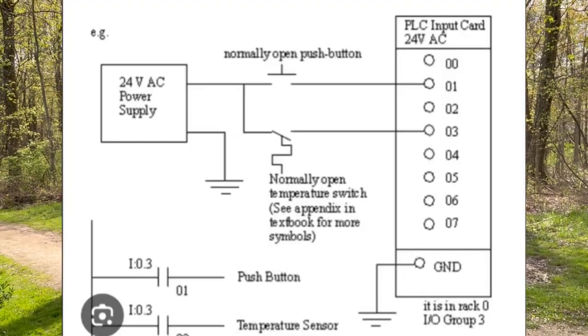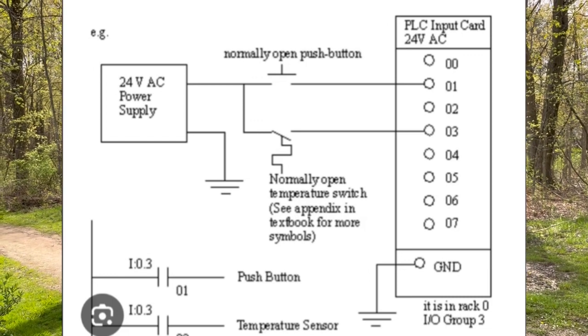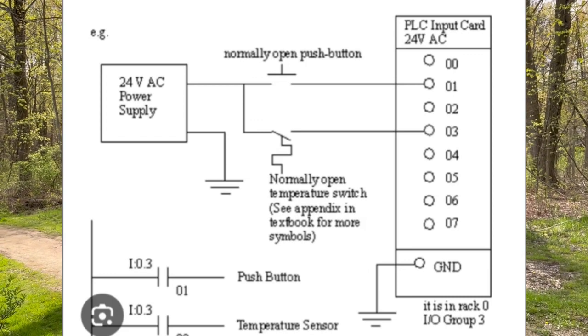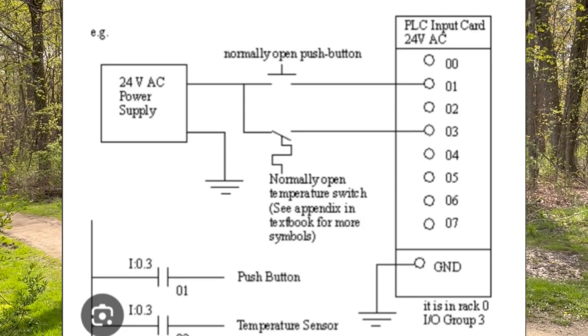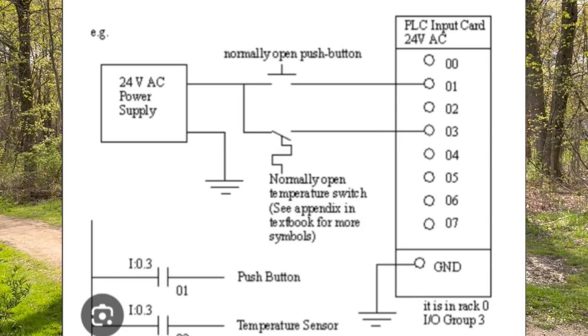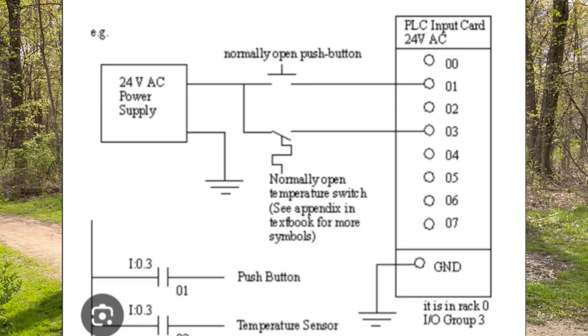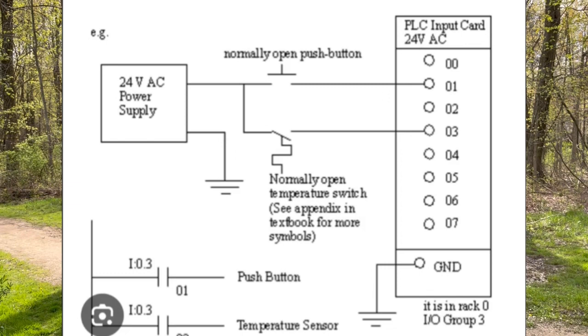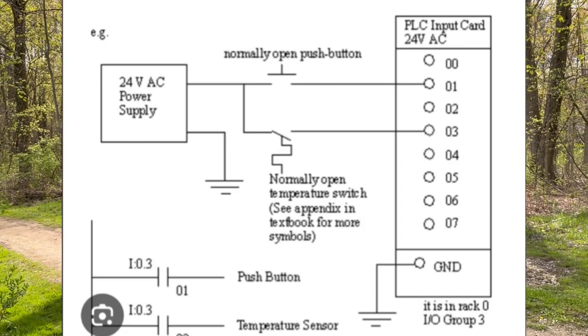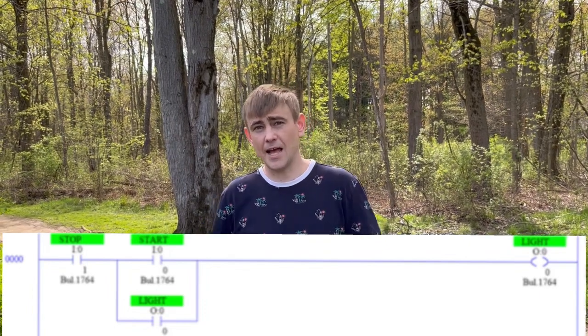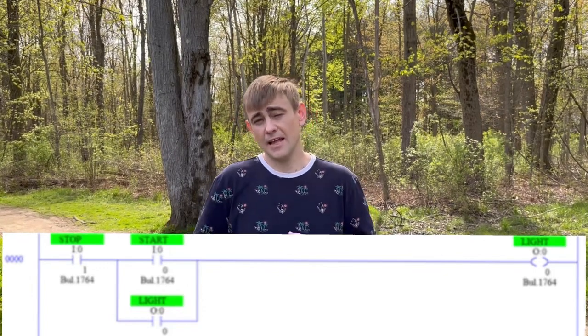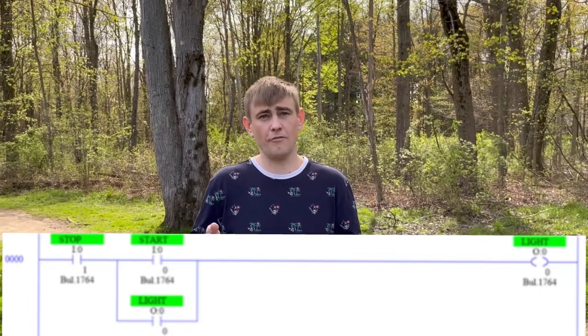So if you're using a normally open push button as a discrete input to a PLC, you would wire a power source to one terminal of the normally open push button. That power, whether it be 120 or 24 volts DC, would end where the push button is. Then when you push in that push button, it would energize through the push button into input 0-1 on your PLC. The power goes into that input terminal on the discrete input module, that input shows active in your PLC logic, and you use that input in your programming to make decisions and turn discrete outputs on or off.